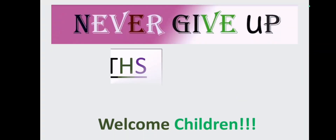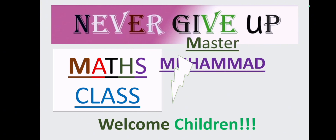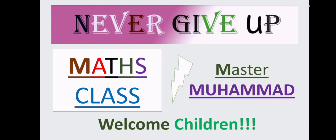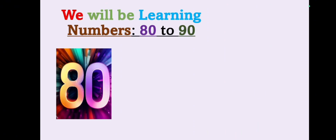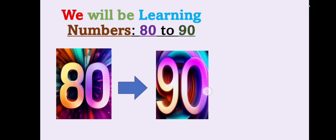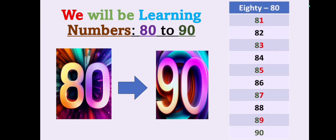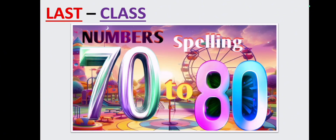Hi children, welcome to Max Class with Master Muhammad. Today we will be learning numbers 80 to 90, along with the count we will also be learning the number spellings, and we will be learning the rule of the golden zero — adding zero with any number. Please stay connected till the last so you don't miss any section. In our last class we learned numbers with spelling 70 to 80.